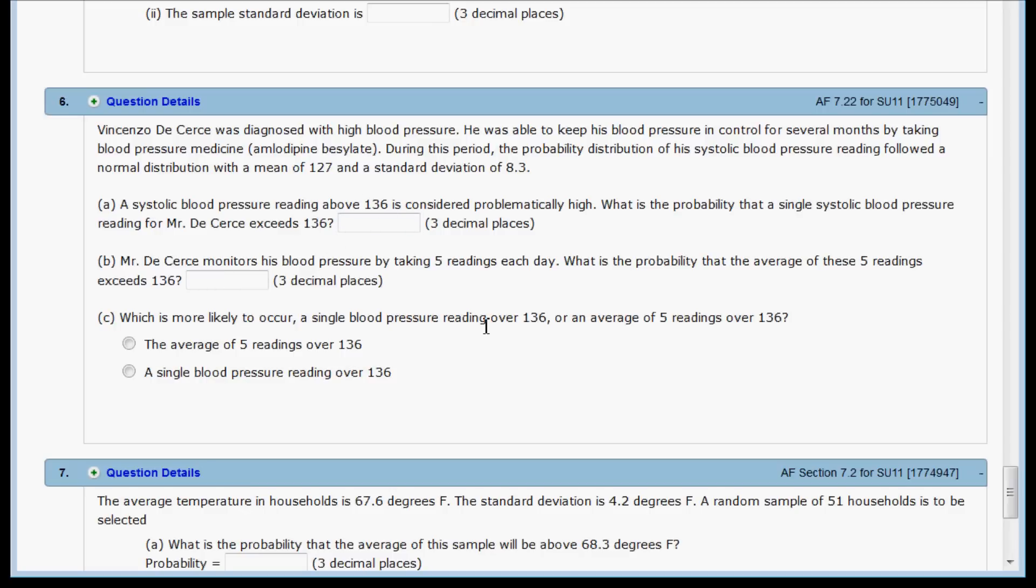For C, just keep in mind that as the sample size increases, you should see less variability. So seeing a single blood pressure reading over 136 would be more likely than seeing an average of 5 readings over 136. And this would be more likely than seeing an average of 10 observations being over 136, or an average of 20 being over 136.